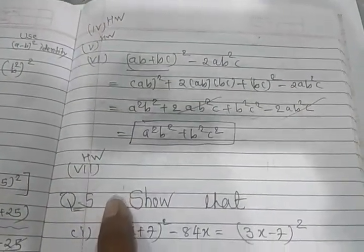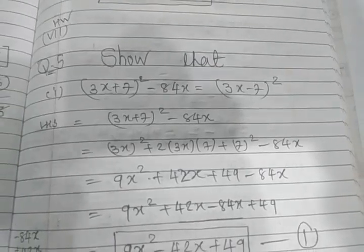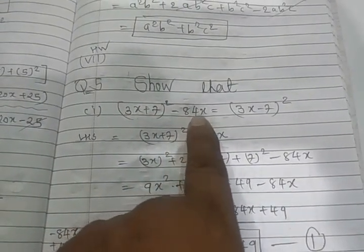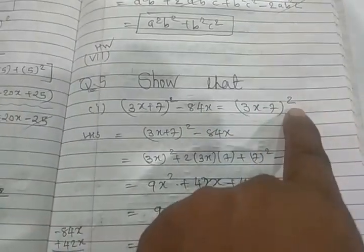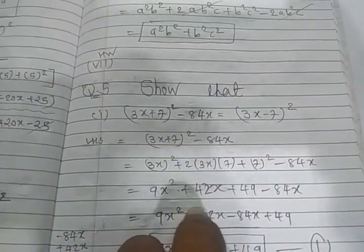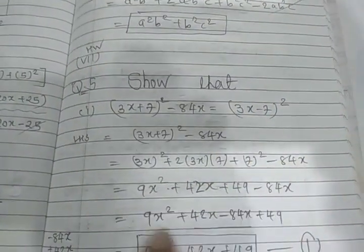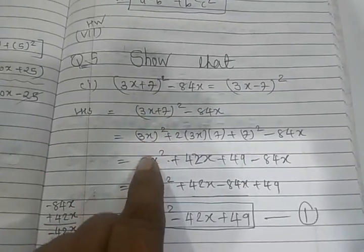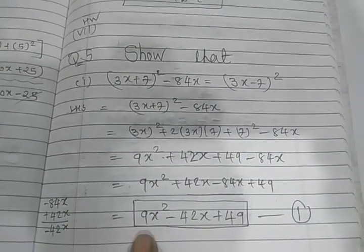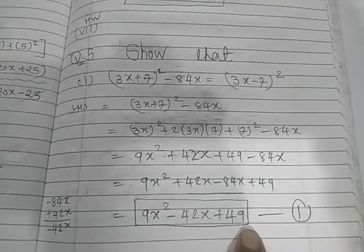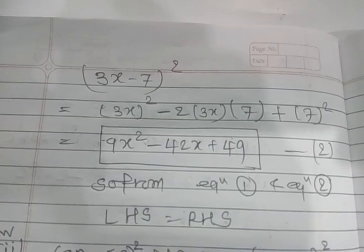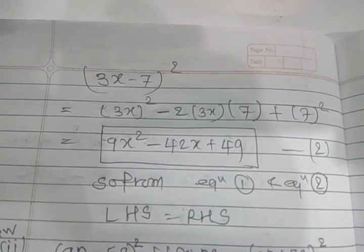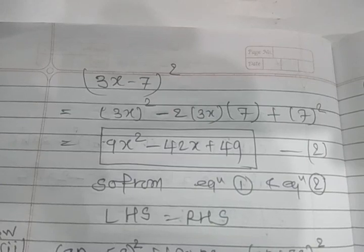Seventh is homework for you. Show that means prove that three x plus seven whole square minus 84x is equal to three x minus seven whole square. Here you have to do first LHS and then RHS, both answers will be same. So take first LHS, here I am doing this LHS, okay answer is over here. Then take RHS, so from equation one and two you see the answer will be same, so LHS equal to RHS.